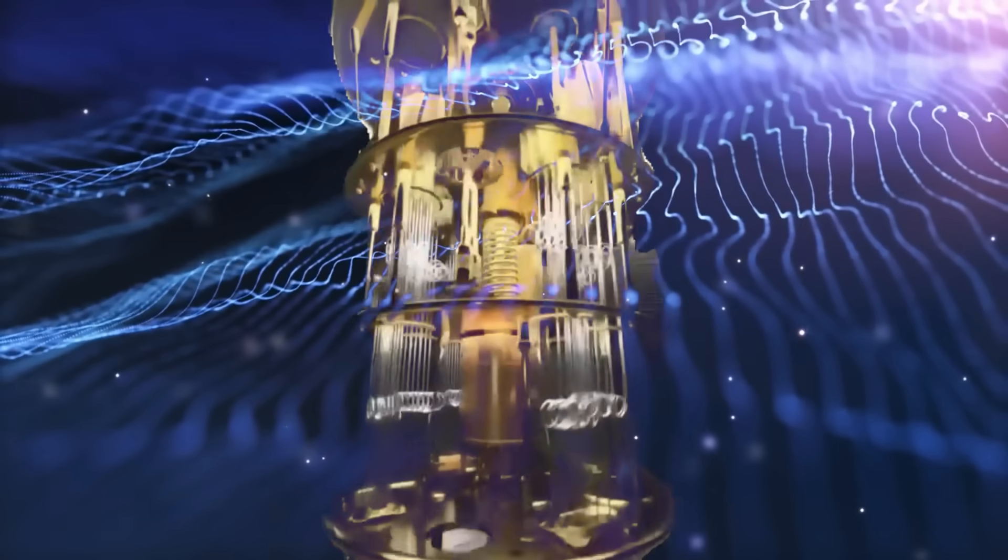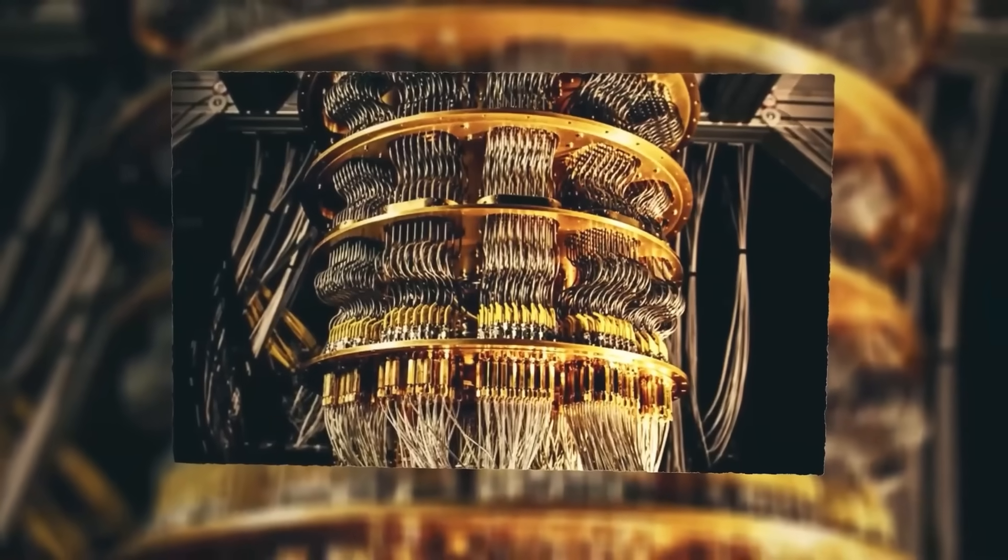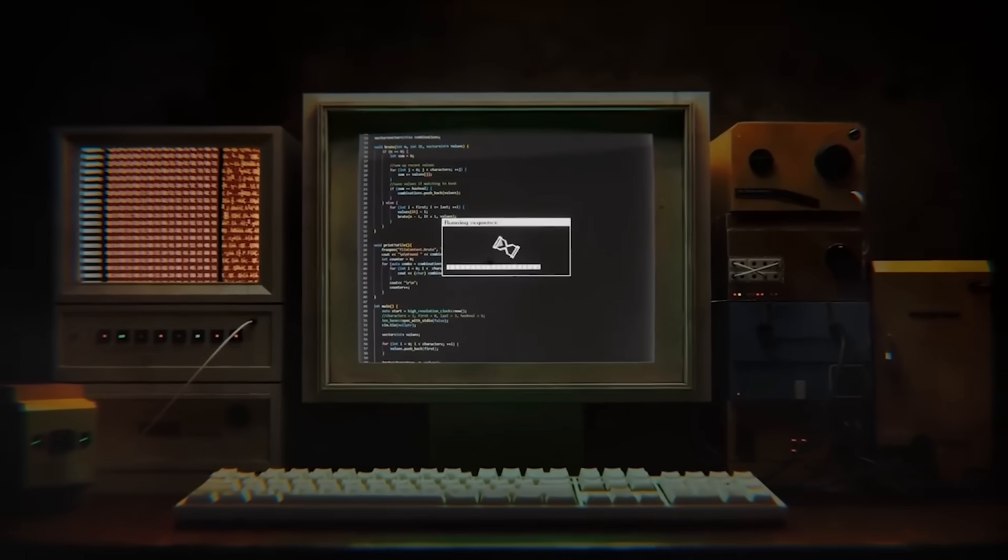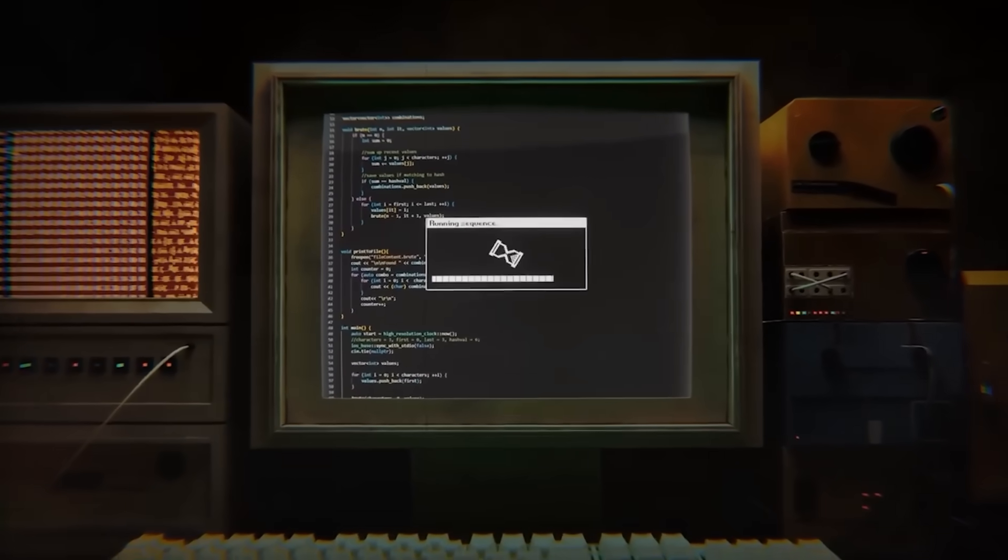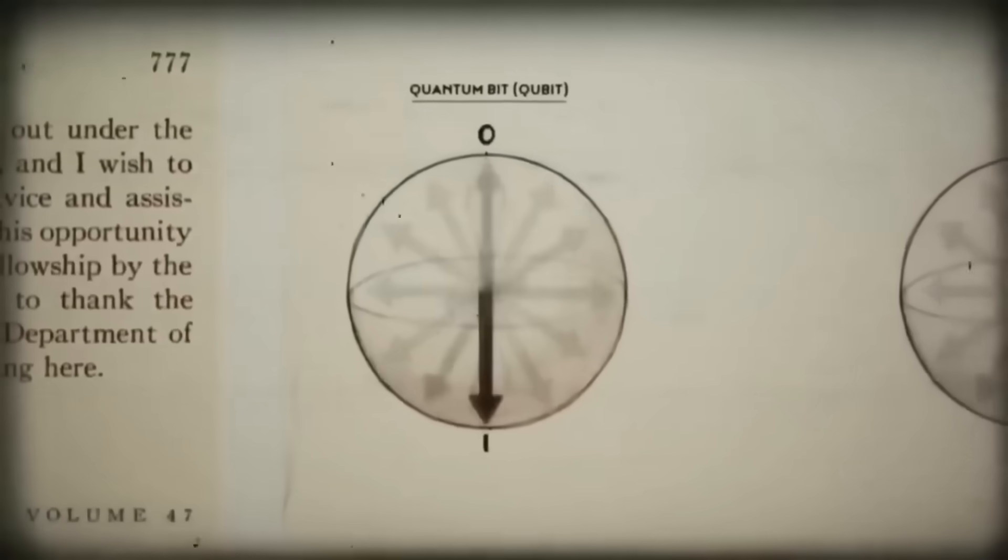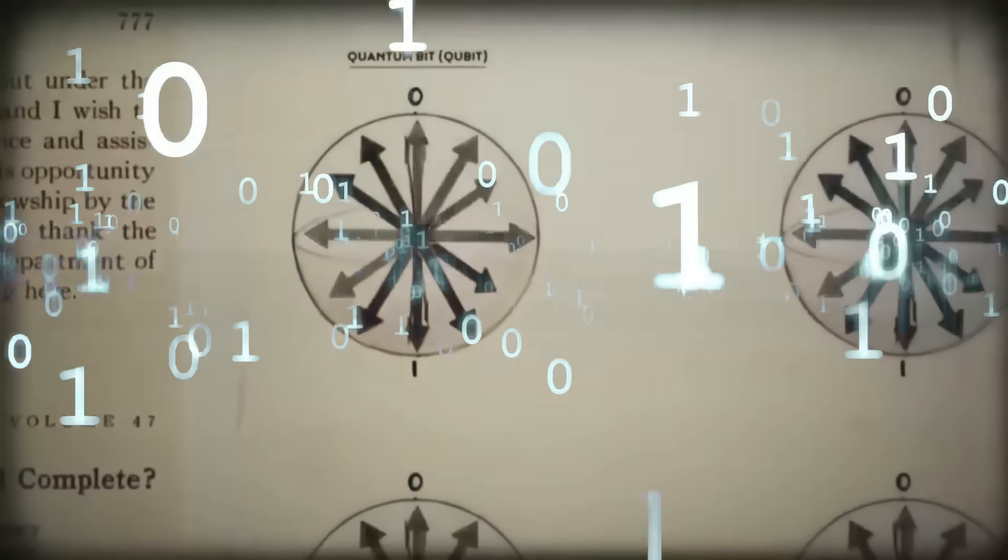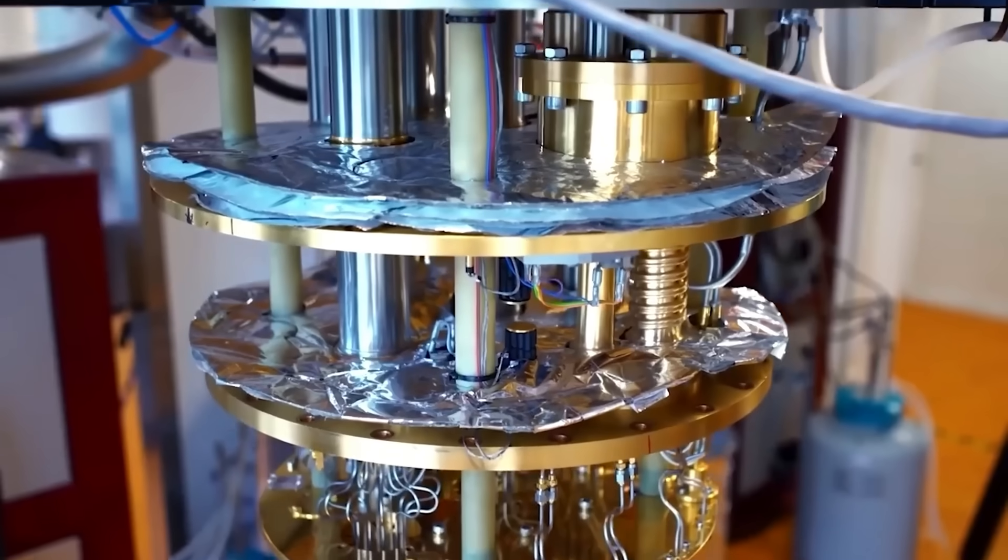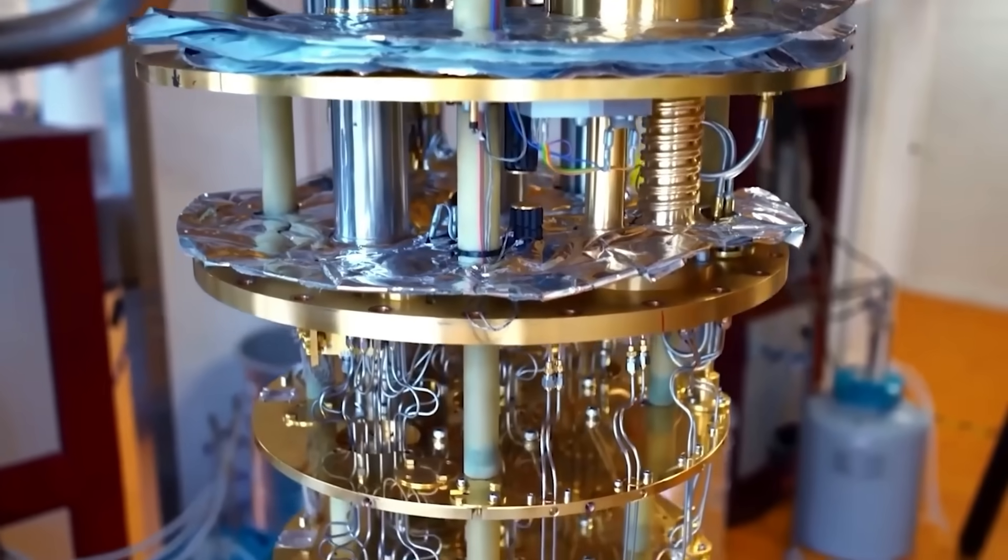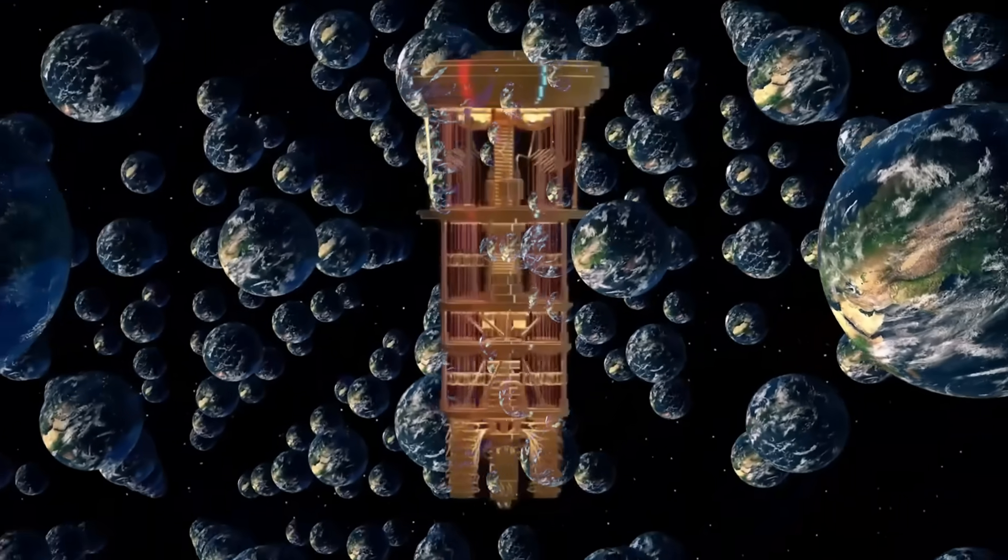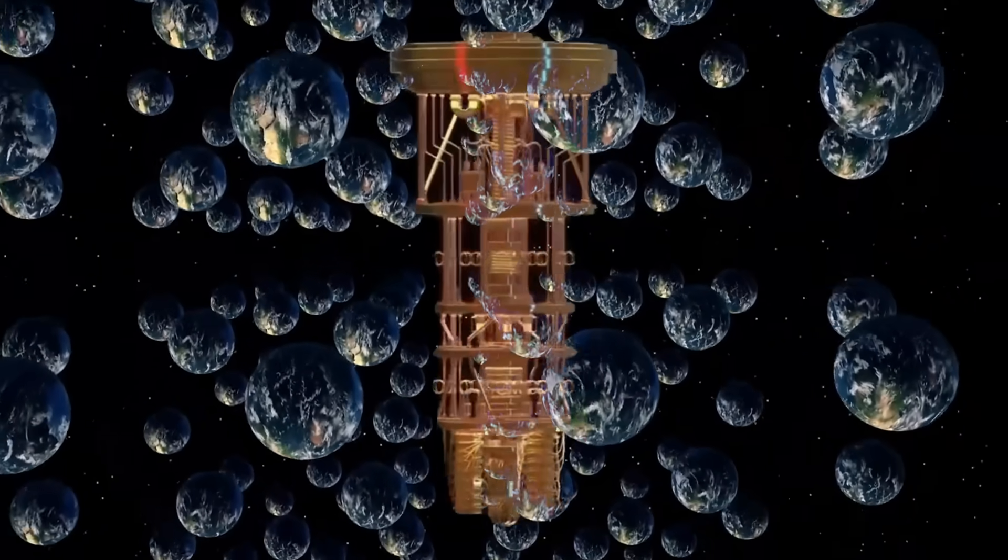Quantum mechanics already defies classical logic. At the subatomic level, particles don't have a single fixed state until they are observed. They exist in multiple possibilities at once, only choosing a state when measured. But what if, instead of simply selecting an outcome, Google's quantum processor actually influenced or connected to another version of reality? If so, this would be the first time in history that we've interacted with the multiverse in a controlled experiment.